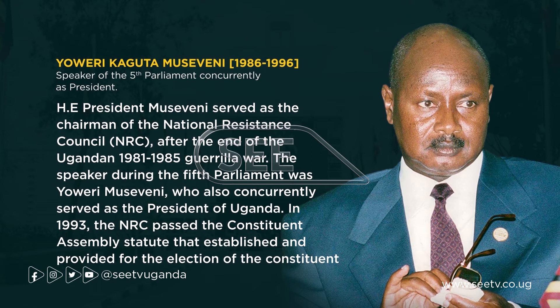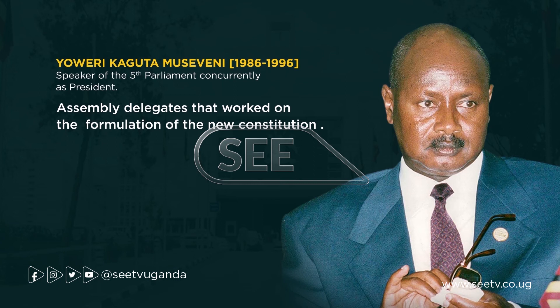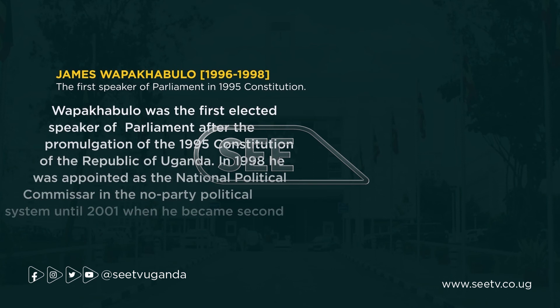Yoweri Kaguta Museveni served from 1986 to 1996. His Excellency President Museveni served as the Chairman of the National Resistance Council, NRC, after the end of the Uganda 1981-1985 guerrilla war. The Speaker during the Fifth Parliament was Yoweri Museveni, who also concurrently served as the President of Uganda. In 1993, the NRC passed the Constituent Assembly Statute that established and provided for the election of Constituent Assembly delegates that worked on the formulation of the new constitution.